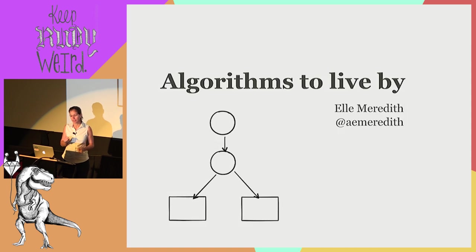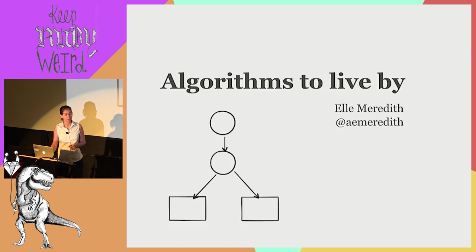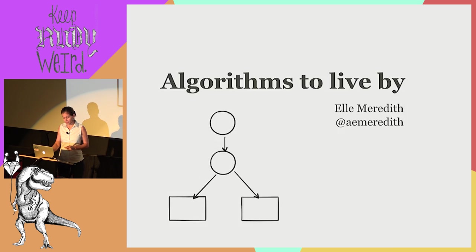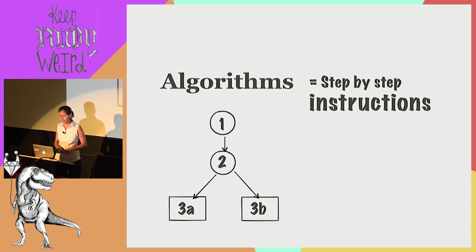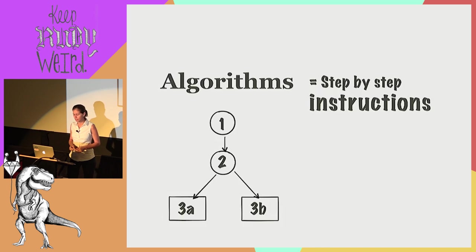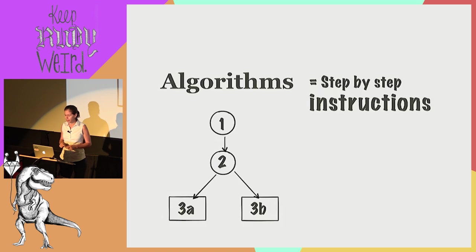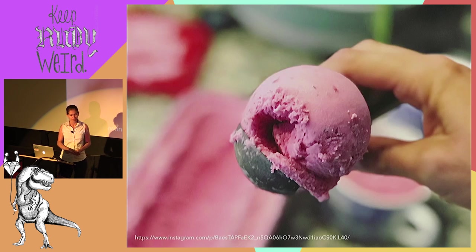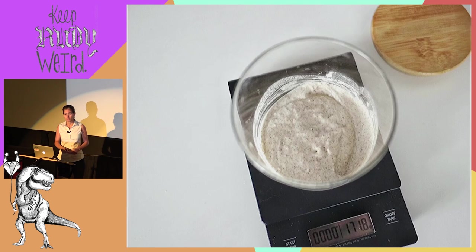I want to talk about algorithms today — what they are, why we want to use them, and a few other examples. Algorithms are a list of instructions for accomplishing a task. We follow algorithms every day when it comes to activities like getting to work, like making ice cream, or like baking bread.